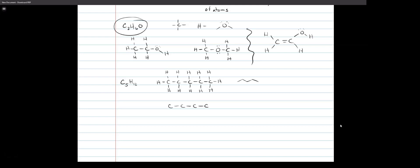With four carbons in a row, we attach the fifth carbon to one of the two middle ones. If you put it on an end carbon, it's the same as the five-in-a-row structure. If you just put the CH3 down and a hydrogen up, it's still the same thing. The hardest part is seeing when it's the same versus different — it takes practice. This is clearly different because this carbon is bonded to three carbons; none of these carbons are bonded to more than two.